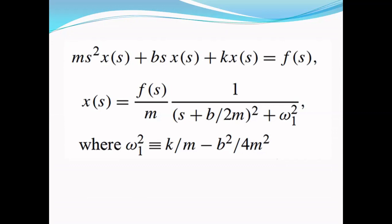This is a summary of what we have done so far. We take the Laplace transform then arrange it in the form X(s) = F(s)/m · 1/((s + b/2m)² + ω₁²), where ω₁² = k/m − b²/4m². The problem is that the right-hand side is a product of two Laplace transforms, so we cannot apply the inverse Laplace transform directly.